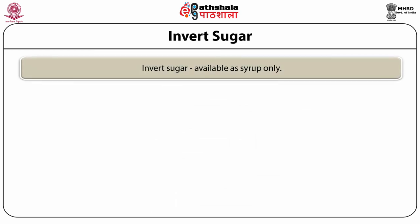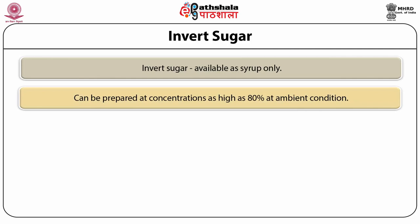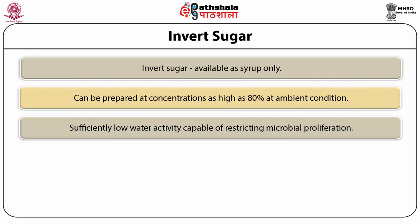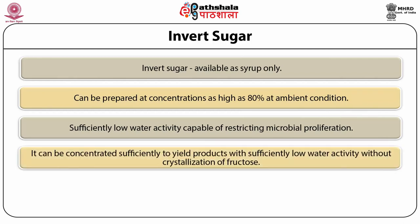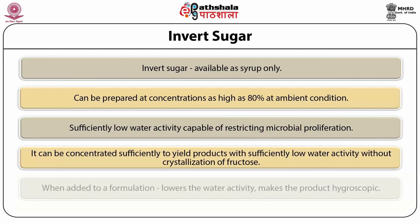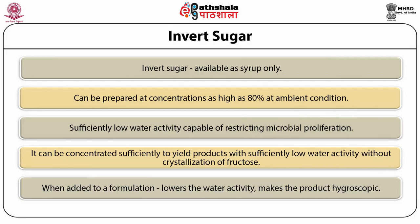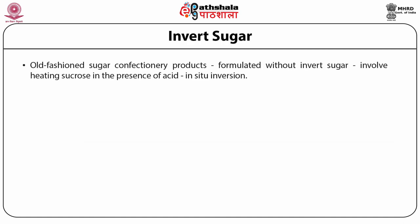Invert sugar is available as a syrup only. It overcomes one of the major drawbacks of sucrose in relation to solubility, as invert solutions can be prepared at concentrations as high as 80% at ambient conditions, compared to 66% for sucrose. These solutions have a sufficiently low water activity capable of restricting microbial proliferation. It can be concentrated to yield a product with significantly low water activity without crystallization of fructose.